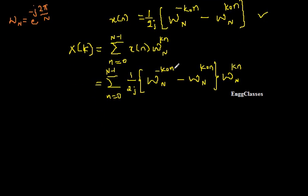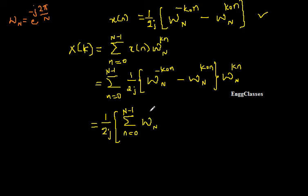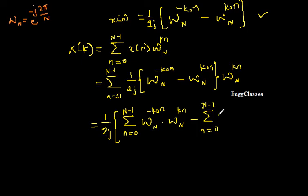Since summation of (a − b) can be written as summation of a minus summation of b, I take 1/(2j) completely out. I am left with: summation from n=0 to N−1 of W_N^((−k₀+k)·n), minus summation from n=0 to N−1 of W_N^((k₀+k)·n).